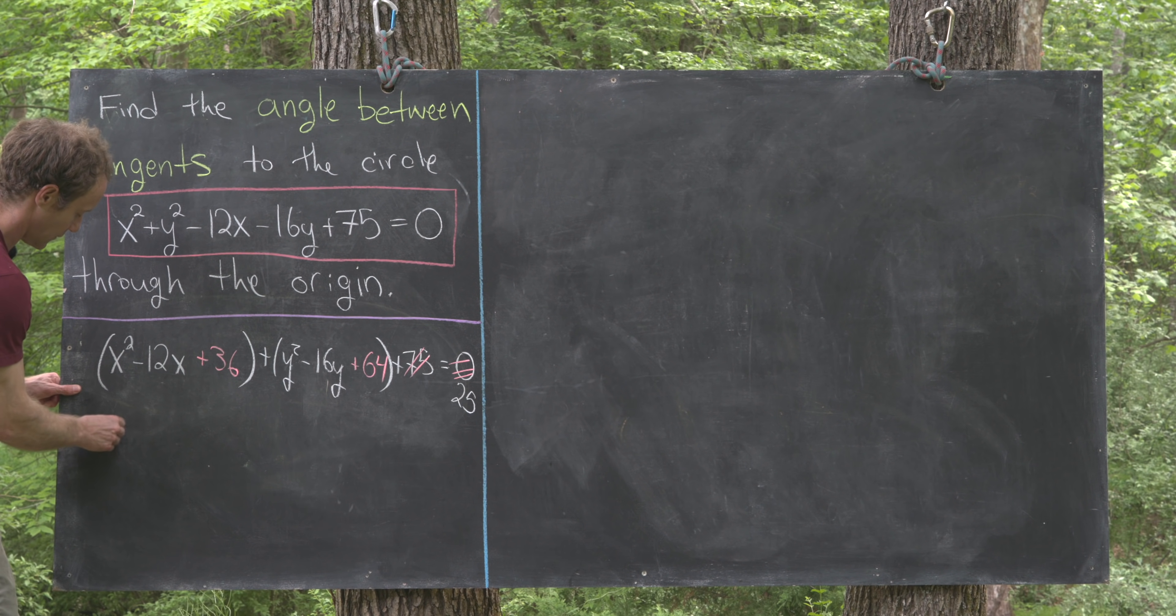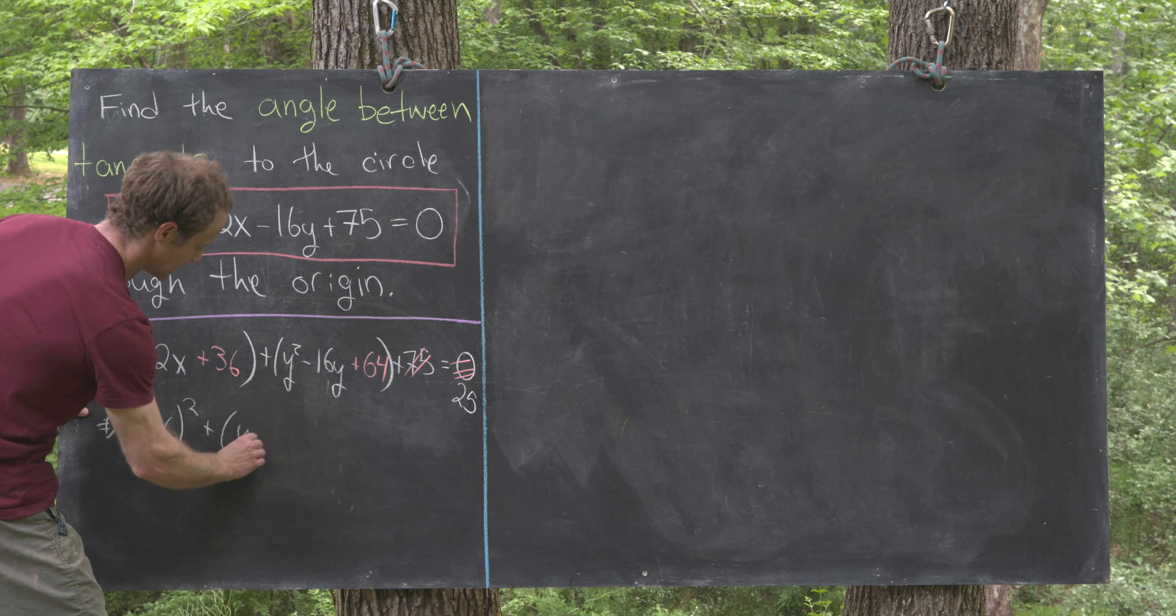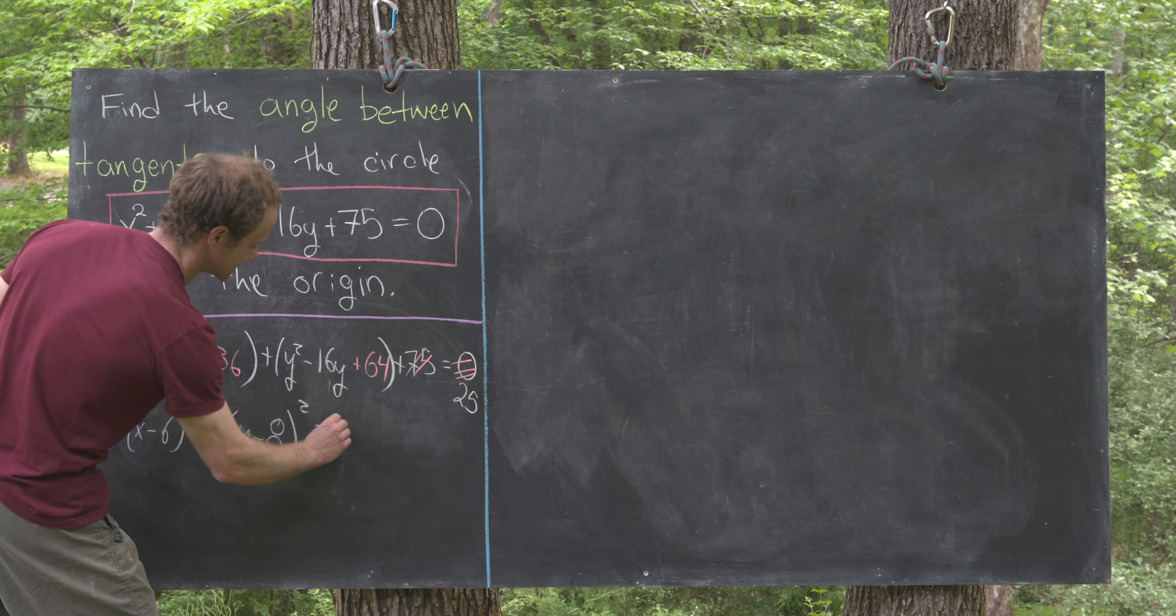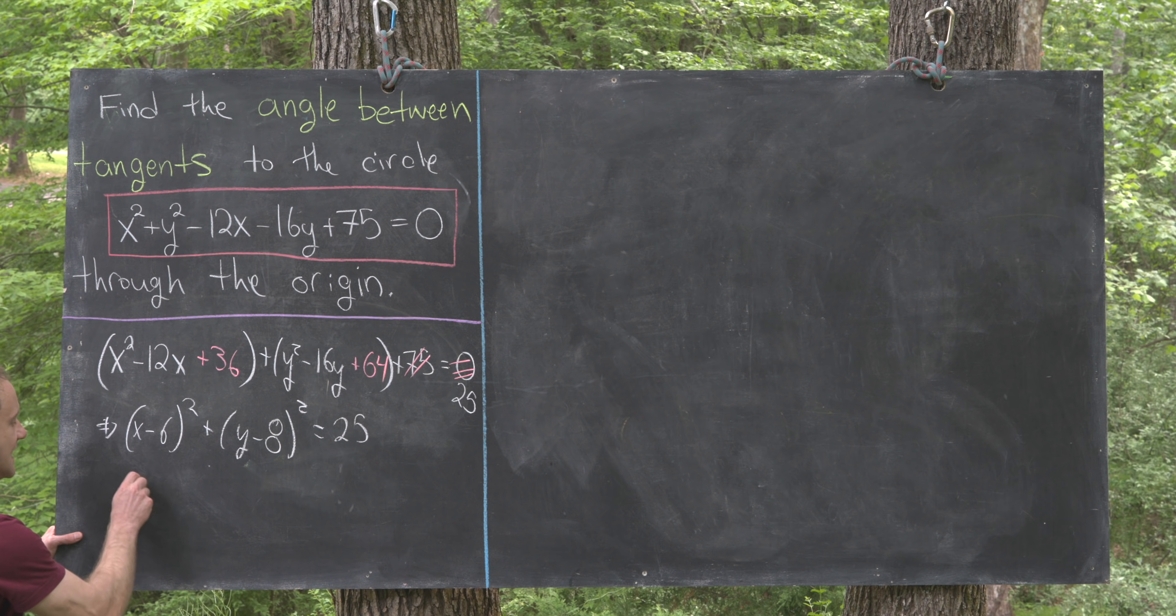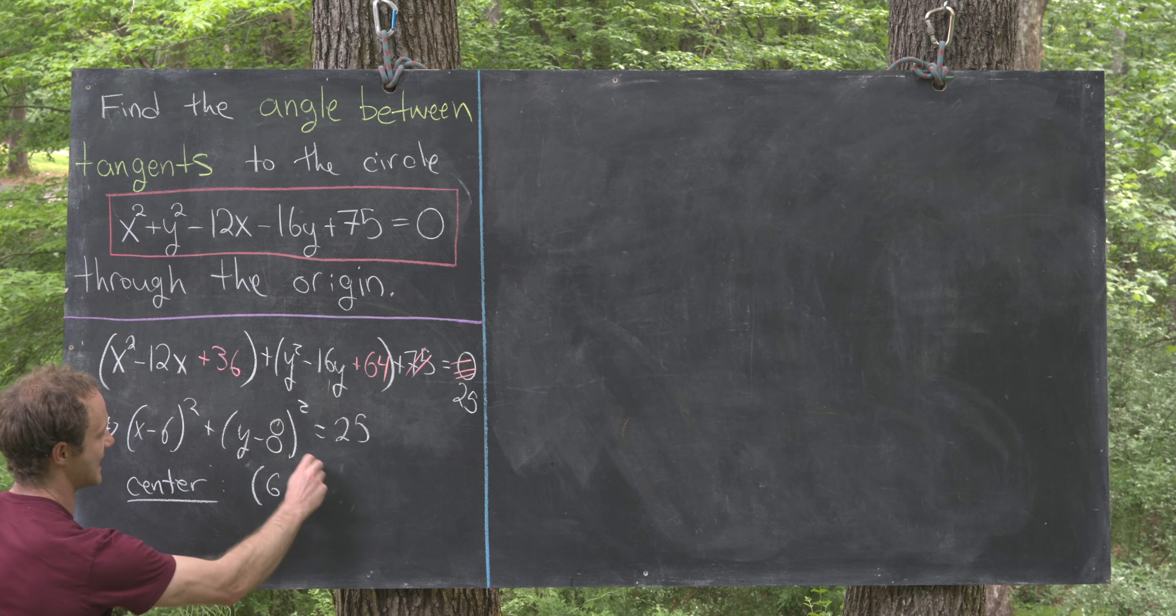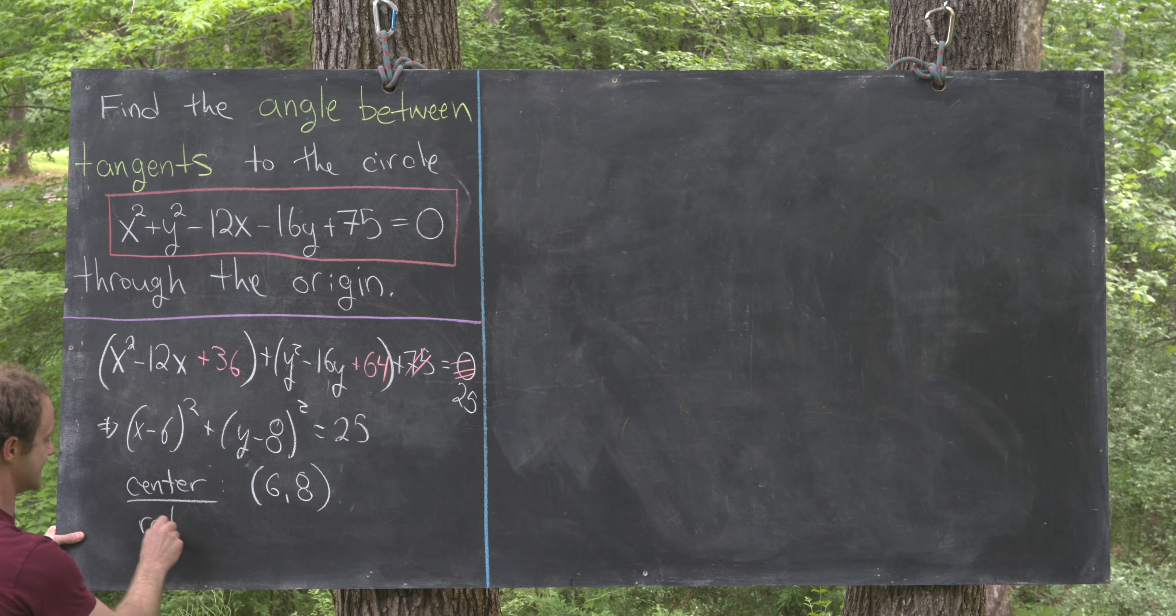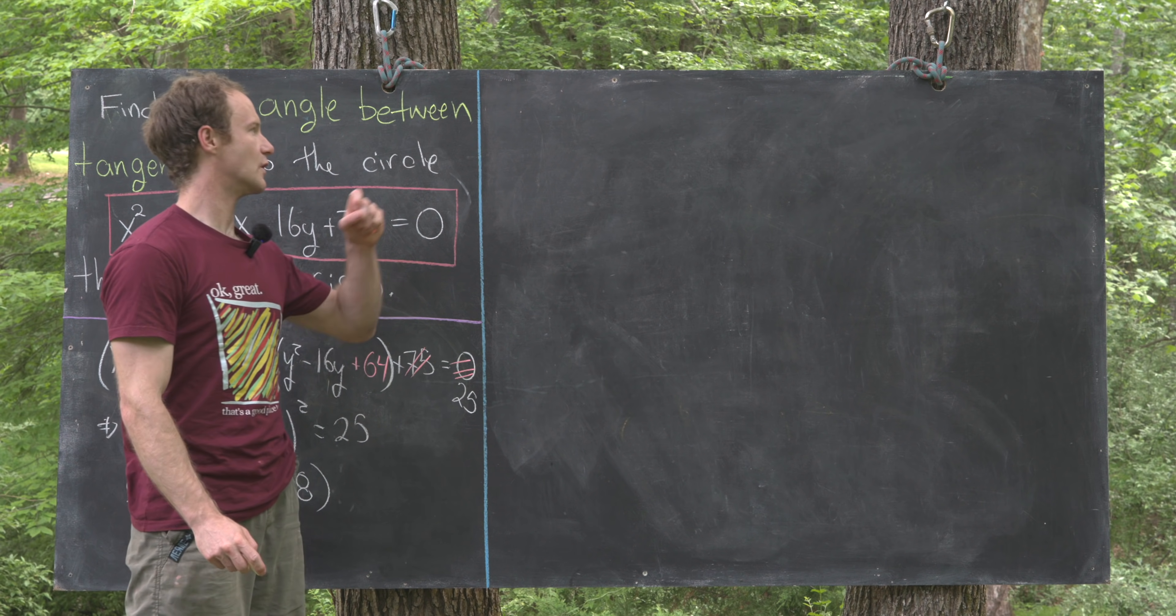Now we can factor this as x minus 6 squared plus y minus 8 squared equals 25, which is 5 squared. That tells us our center is in the first quadrant at the point 6 comma 8, and we have a radius of 5. Let's use this data to get a picture of this circle.